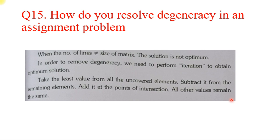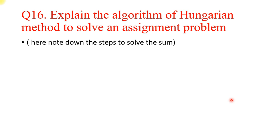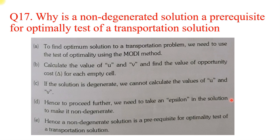How do you resolve degeneracy in an assignment problem? Explain the algorithm of the Hungarian method to solve an assignment problem — for this question you just need to note down the steps for how you solve the sum. Why is a non-degenerate solution a prerequisite for the optimality test of a transportation solution?